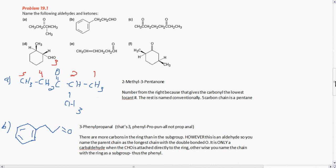Problem 19.1, letter A. You have 2-methyl-3-pentanone. You number from the right because that gives the carbonyl the lowest locant number. The rest is just named conventionally, it's a 5-carbon chain as a pentane. You can see I numbered the carbons 1, 2, 3, 4, 5, with 3 being closest. It would be 3 from either side, but you have another substituent, so you want to name it from the right because that would give both of them the lowest locant number.